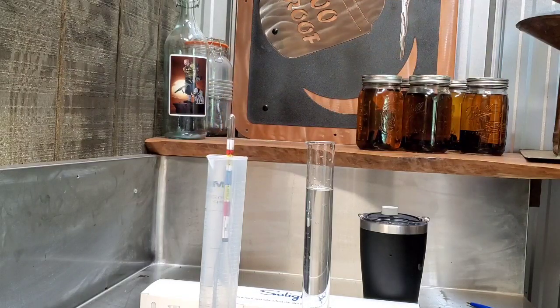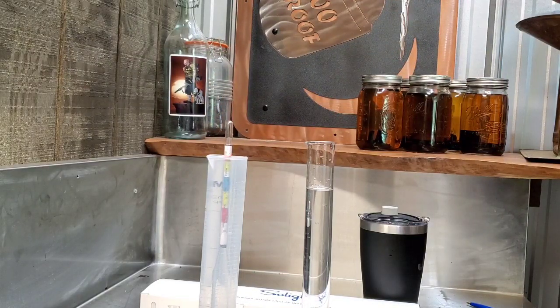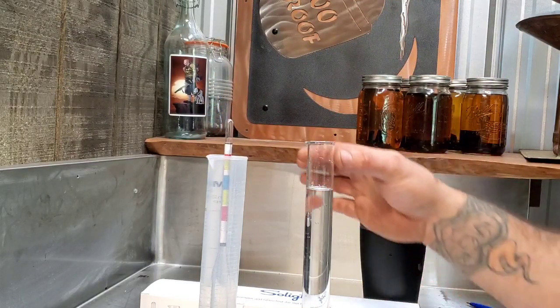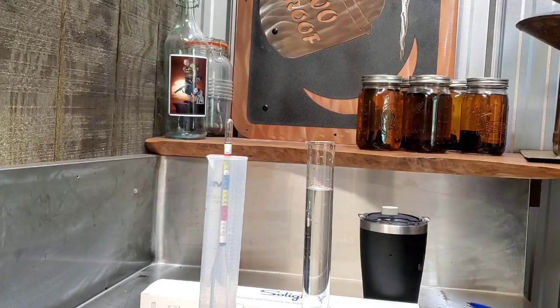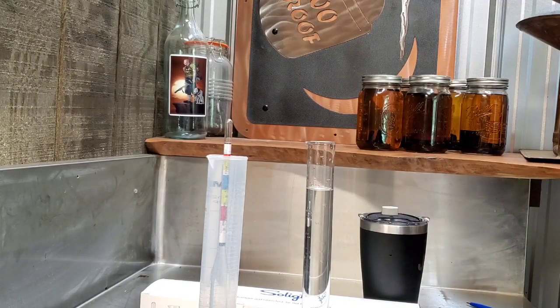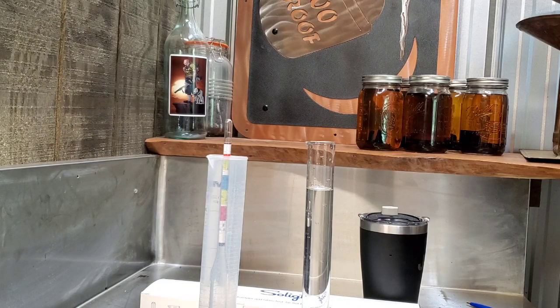So maybe 10.5%, maybe around 11% alcohol by volume. That is potential alcohol by volume. So if we use a yeast that will convert 100% of this sugar into alcohol, we're going to be sitting in the neighborhood of 10 to 11% alcohol by volume in our wash.